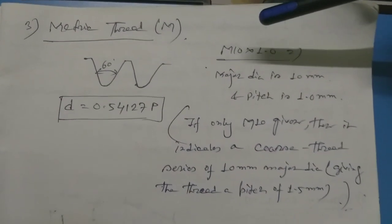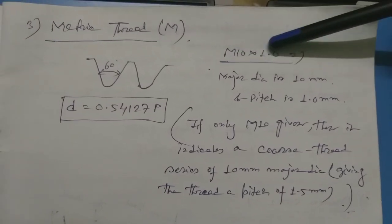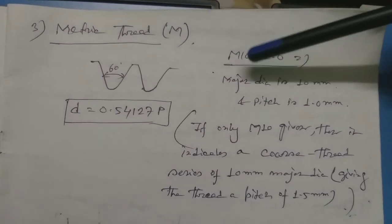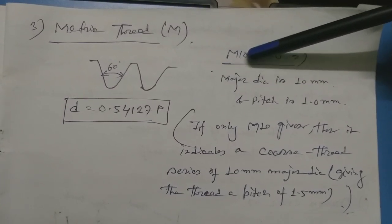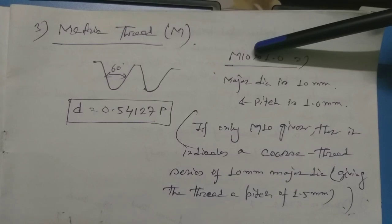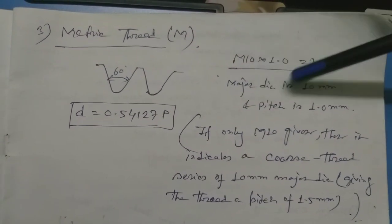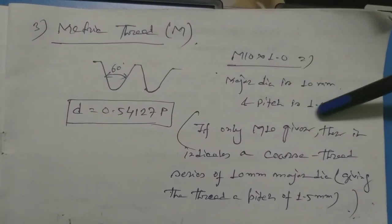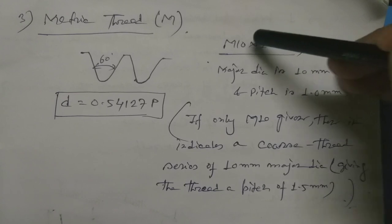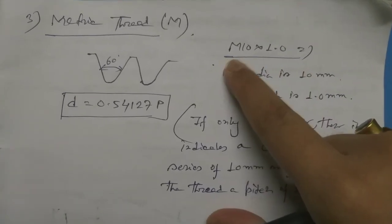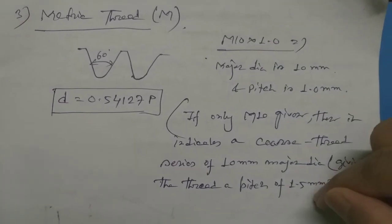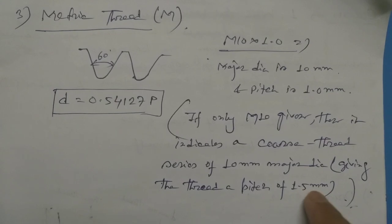The metric thread designation uses codes like M10, M20, M30, etc., where M stands for metric and the number indicates the diameter in millimeters. For example, M10 with a standard pitch of 1.5 mm is a common designation.